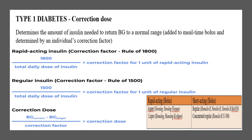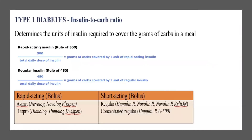When you've calculated the correction factor, you need to know what it means. The correction factor represents the blood glucose drop per one unit of rapid acting or regular insulin needed to return blood glucose to normal. For the insulin-to-carb ratio, the value you find is the grams of carbs covered by one unit of rapid acting insulin, or the grams of carbs covered by one unit of regular insulin.